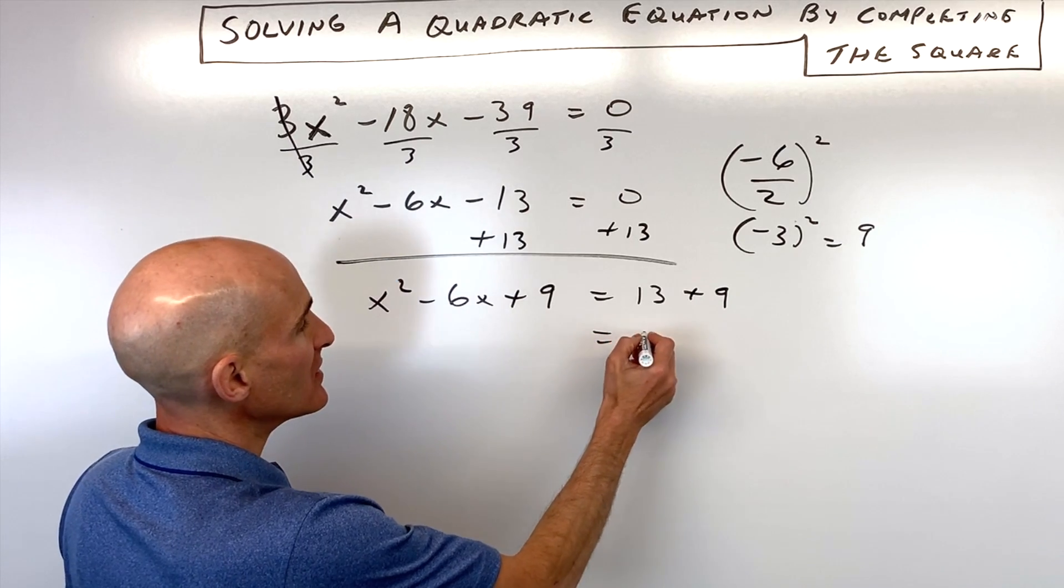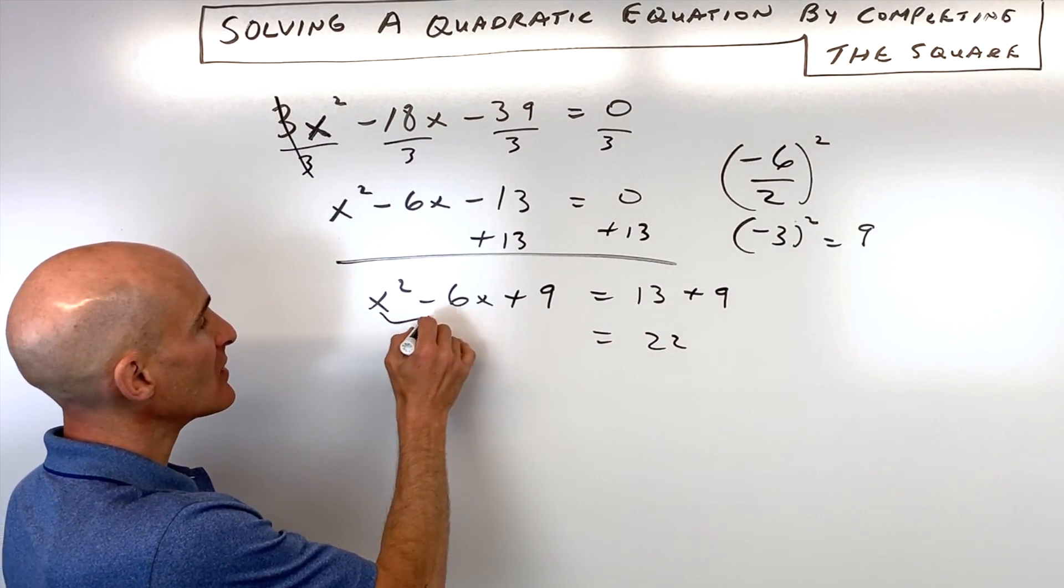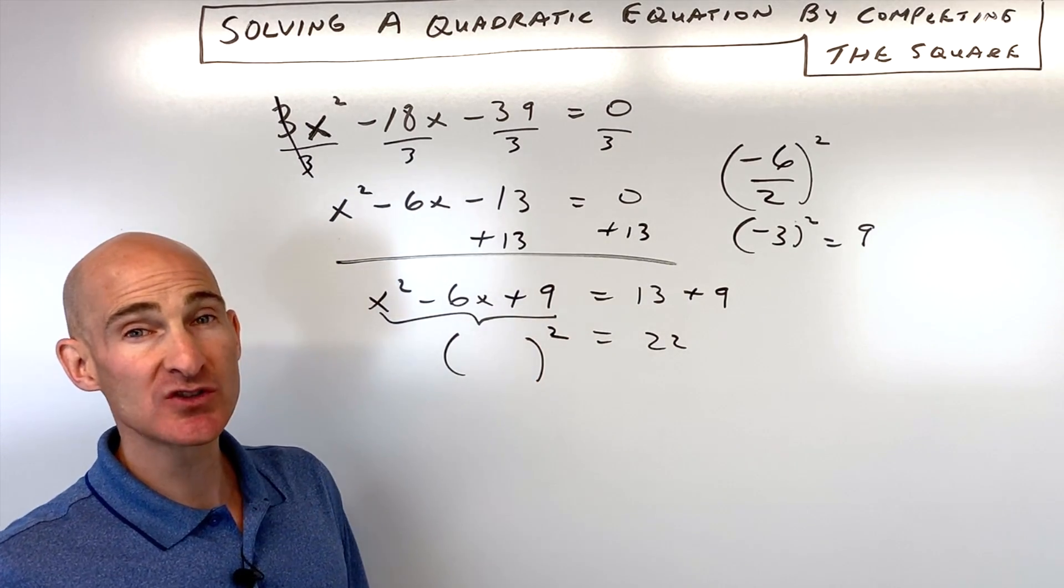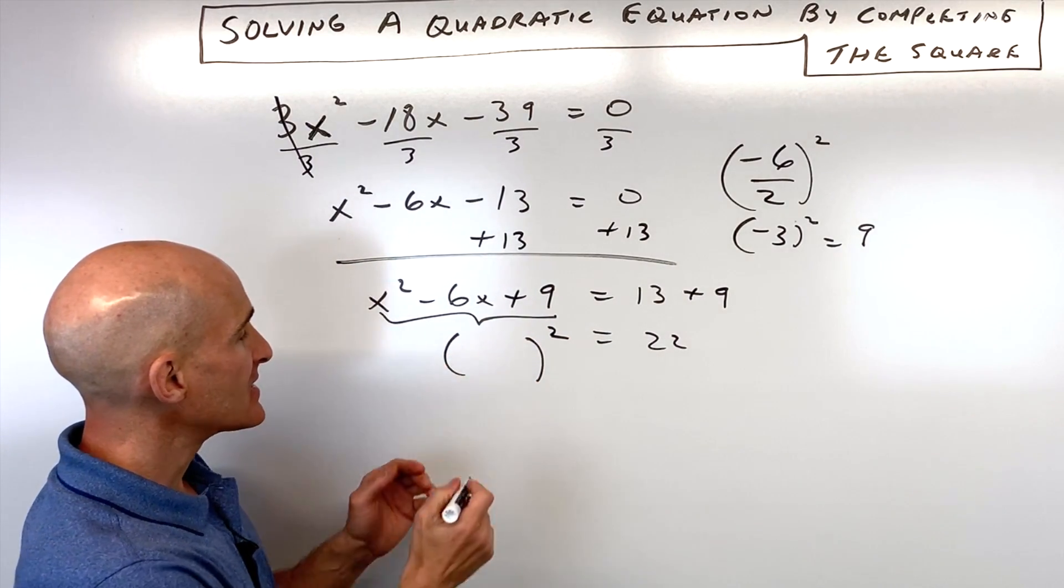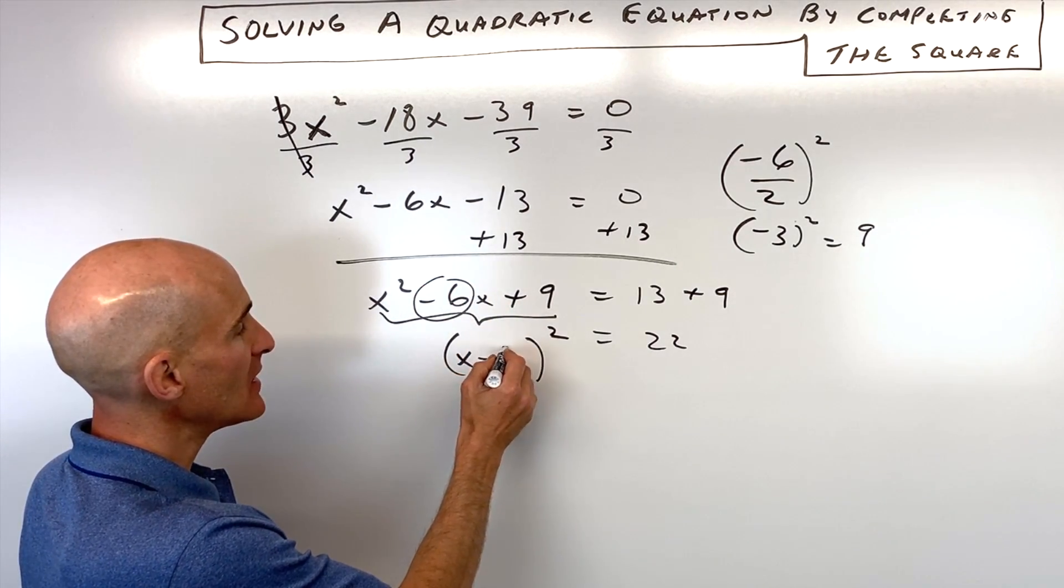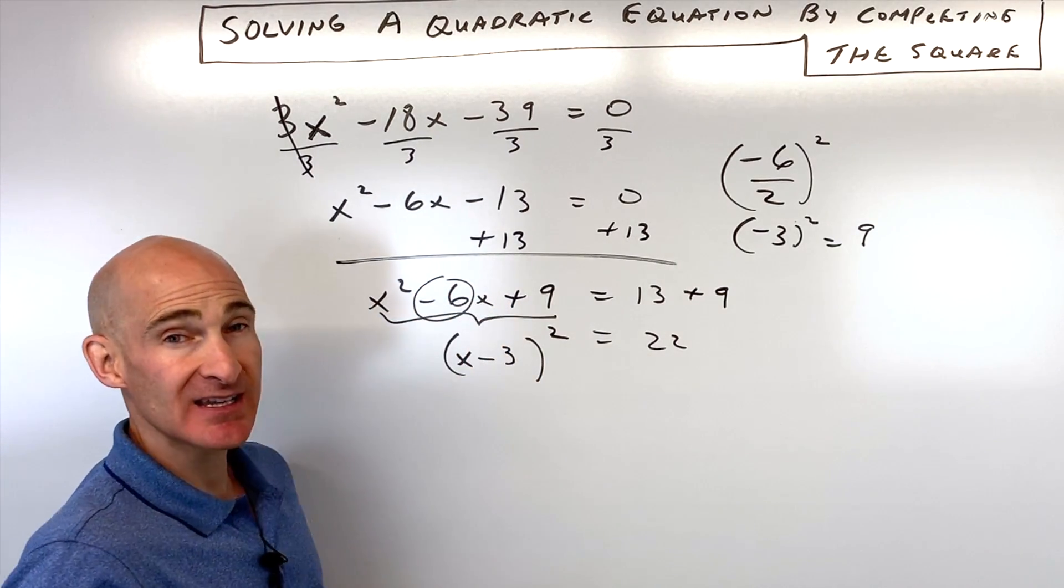So now what we can do is simplify the right side and we can factor this left side. It's going to be a perfect square, because that's what the completing the square process is all about. And it's always going to be half of this middle coefficient. So it's going to be negative 3. If this was plus 6x, it would be plus 3.